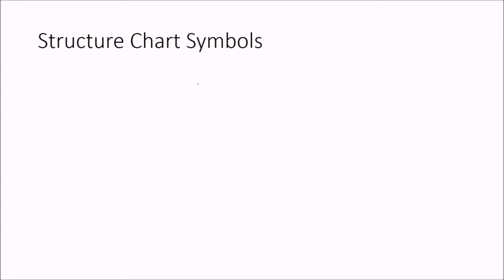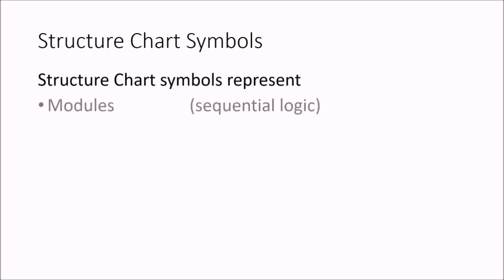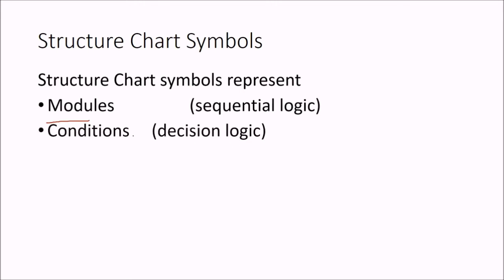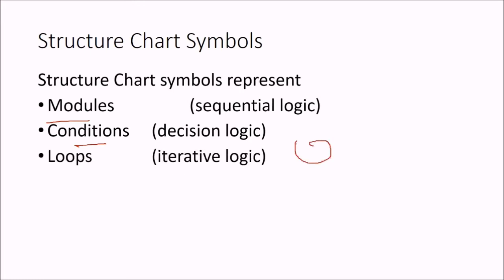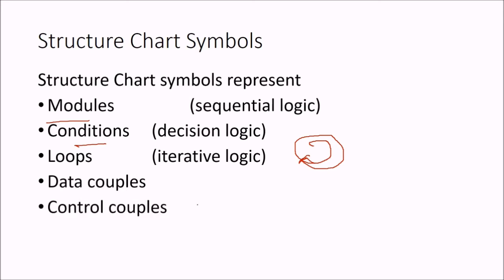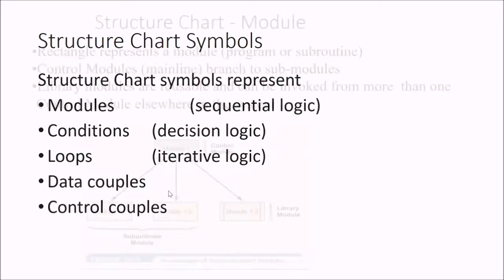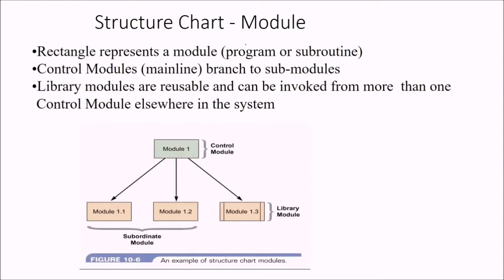The symbols employed in a structure chart include: modules which represent sequential logic, conditions which represent decision logic, loops which represent iterative logic, and data couples and control couples. The rectangle represents a module, which is a program or a subroutine.